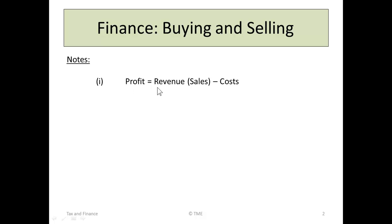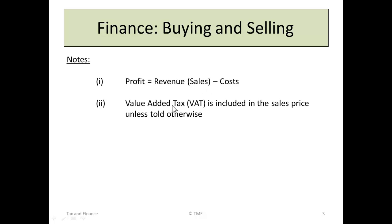Profit is defined as revenue or sales minus costs — the amount of money you get in, the revenue, or the amount of money from sales minus the costs of those sales. Value Added Tax, or VAT as it is shortened to, is included in the sales price unless you are told otherwise. So when we pay for something in a shop, we assume the VAT is already included.